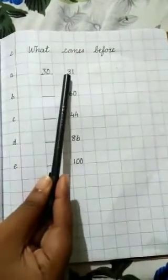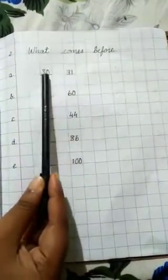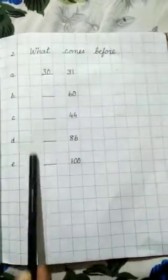What comes before 31? 30. Now complete the rest children.